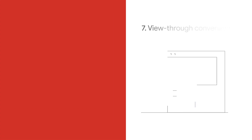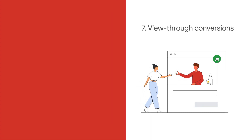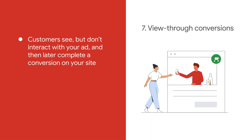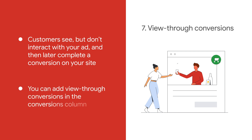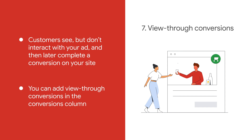The view-through conversions column tells you when customers see but don't interact with your ad, and then later complete a conversion on your site. You can add view-through conversions in the conversions column to understand when this is happening.